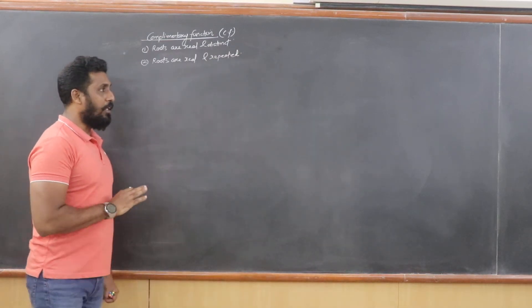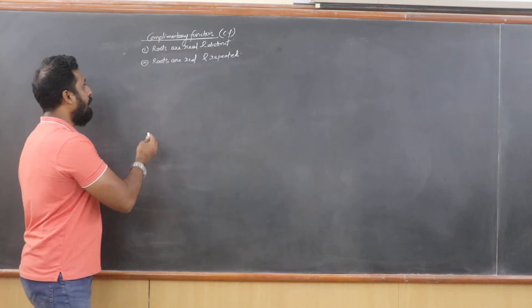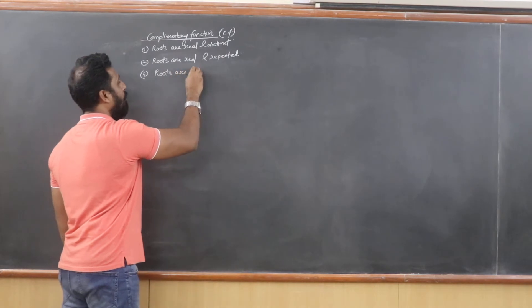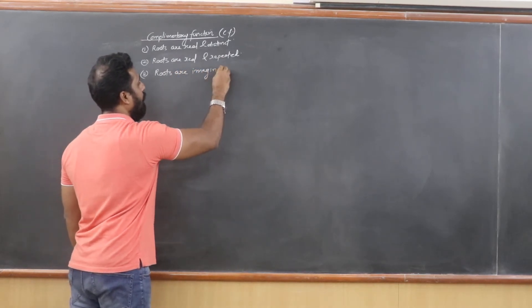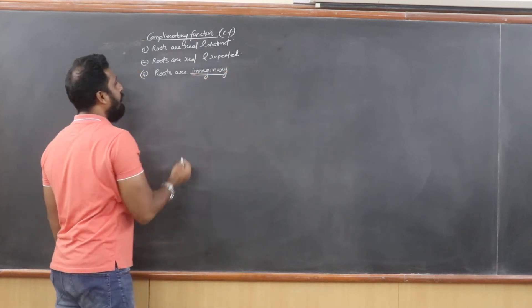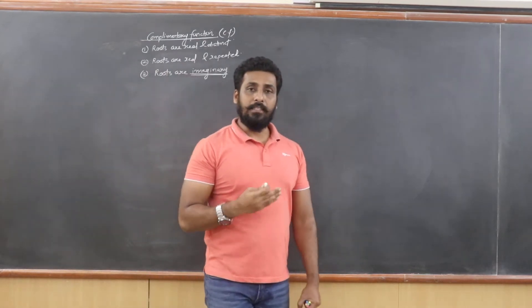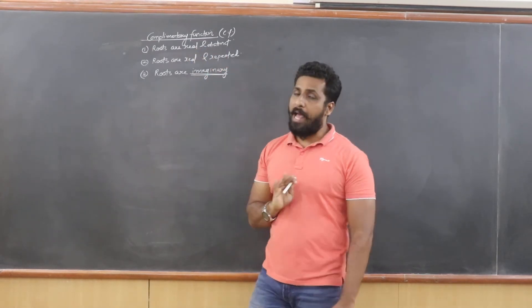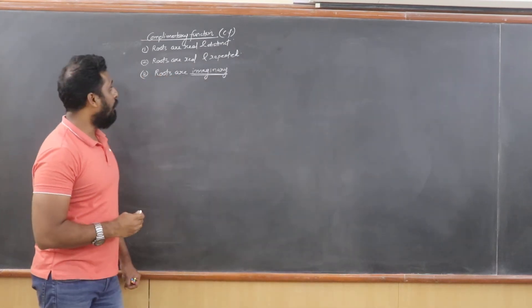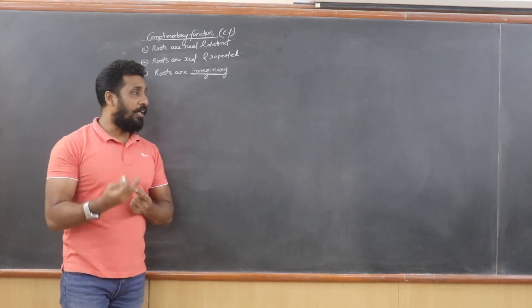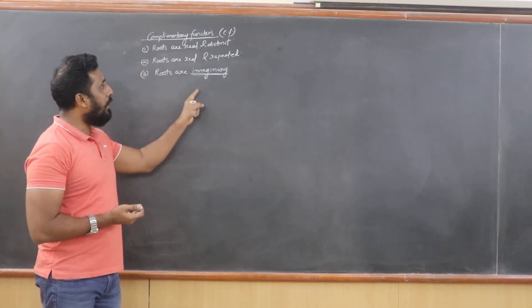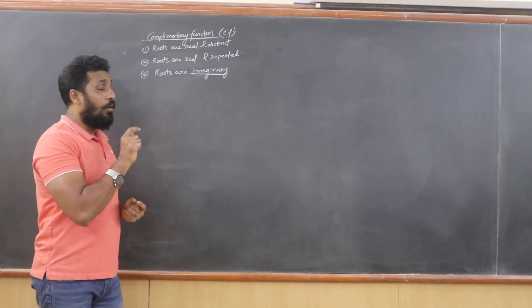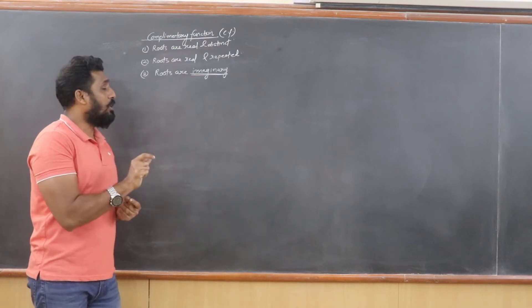The next complementary function — the third type — is when the roots are imaginary. We have already seen what happens when the roots are real and distinct, or real and repeated. The next thing to learn is when the roots are imaginary. We will discuss two types: when the imaginary roots are distinct, and when they are repeated.